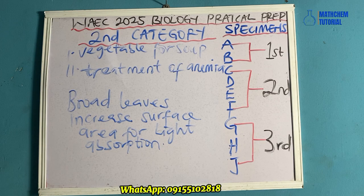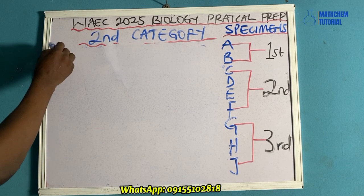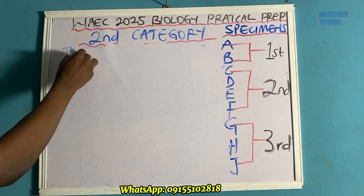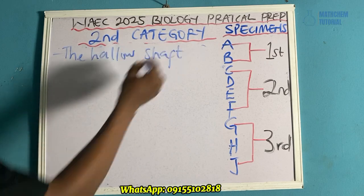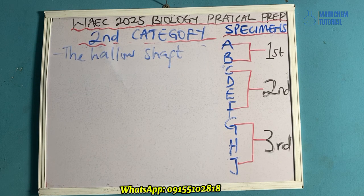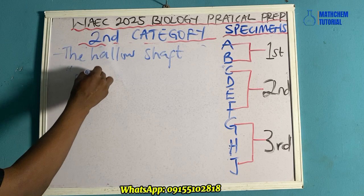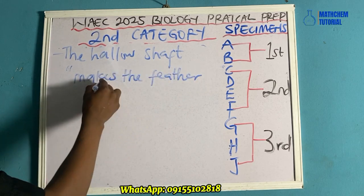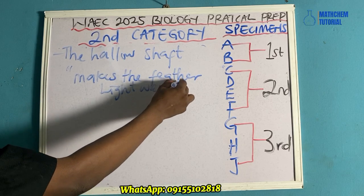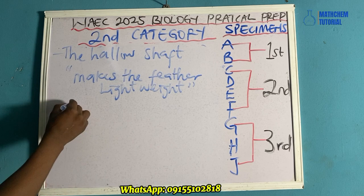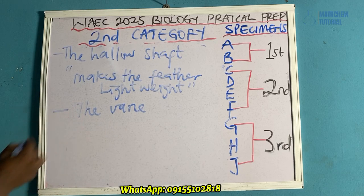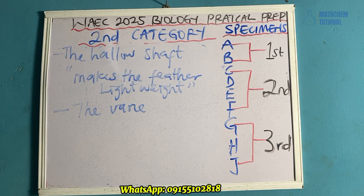Another question is that you should observe specimen D carefully and state the function of the hollow shaft and the vein. For the hollow shaft: it makes the feather lightweight. For the vein: it aids flight by creating surface area.